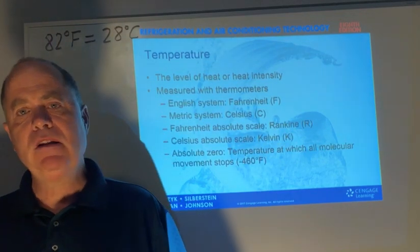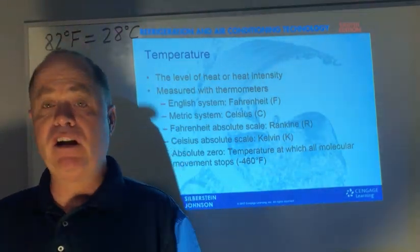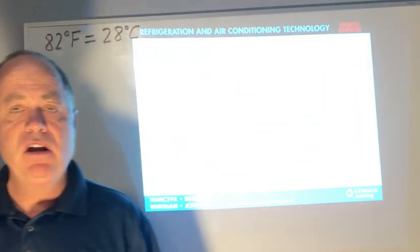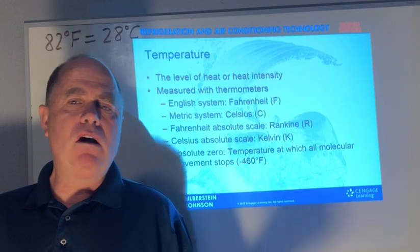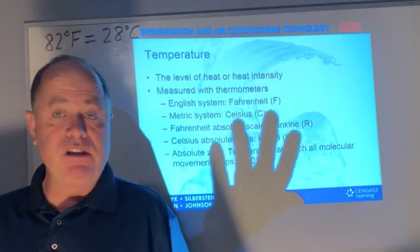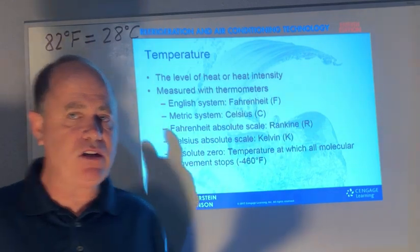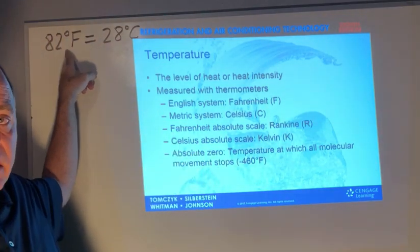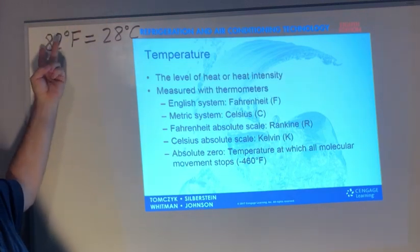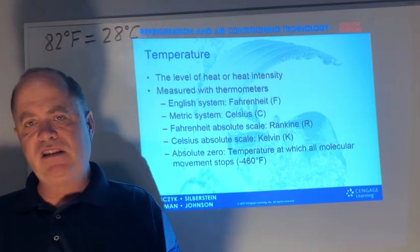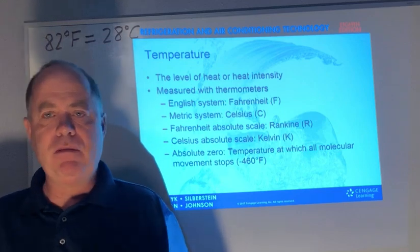In the United States we generally deal with Fahrenheit. One little trick: if we look at the whiteboard, 82 degrees Fahrenheit is equal to 28 degrees Celsius. So if you just flip the digits of 82 to get 28, it gives you a sense of Celsius in a normal outside air temperature range to help you remember that.